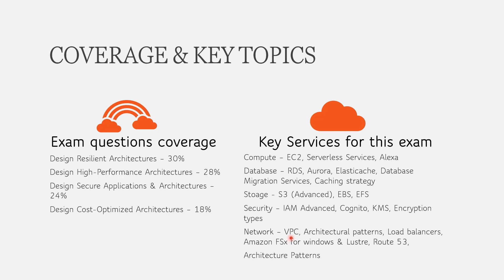Networking and architecture is the backbone of this exam. You must know all VPC components — Direct Connect, bastion hosts, VPN, endpoints, and more. Know architectural patterns and load balancers: when to use Application Load Balancer vs. Network Load Balancer vs. Classic Load Balancer. Expect questions on Amazon FSx for Windows and Lustre, and Route 53 routing policies — especially the difference between geolocation and latency-based routing.